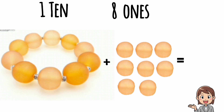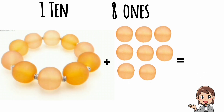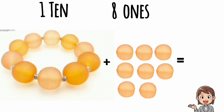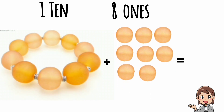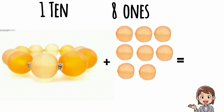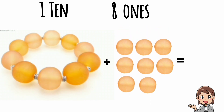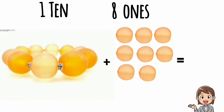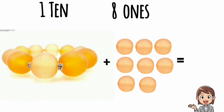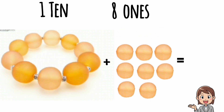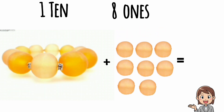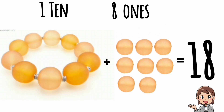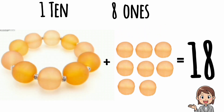Students, look at this picture. It has one bracelet and eight beads. One bracelet means one ten and eight beads means eight ones. So one ten and eight ones make eighteen.